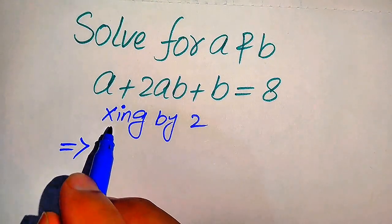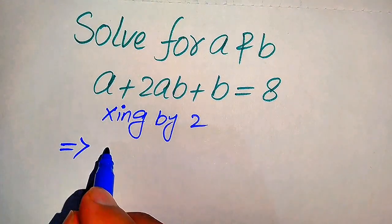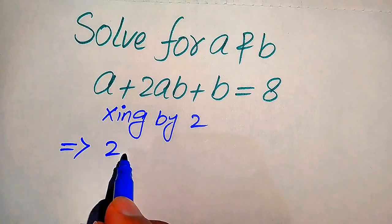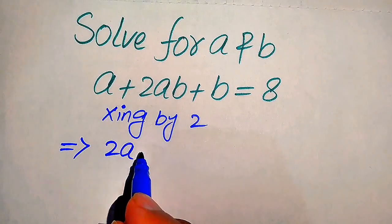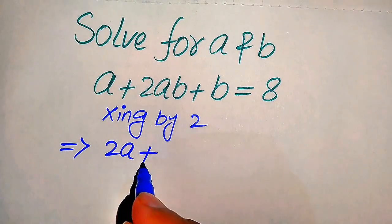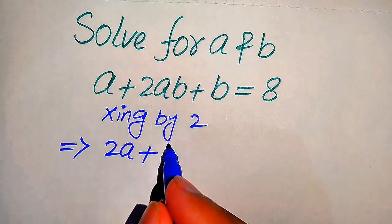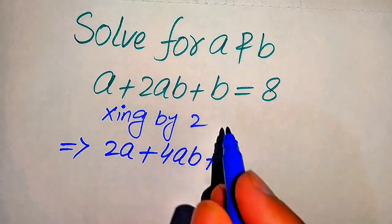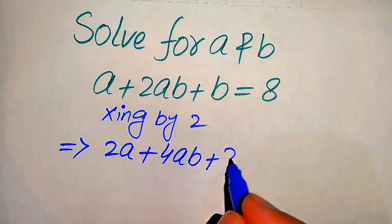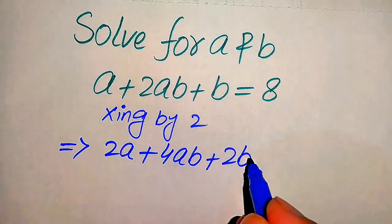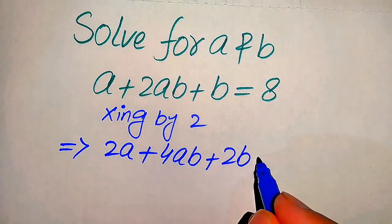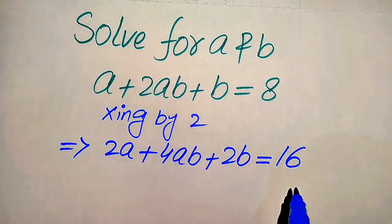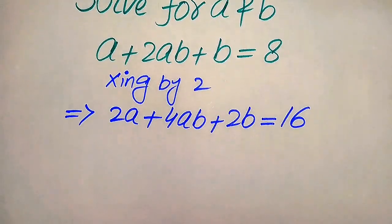After multiplication, we multiply 2 on each of these terms and it will become 2a plus 4ab plus 2b equals to 2 times 8, which becomes 16.